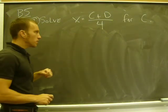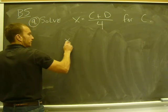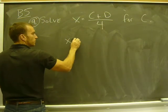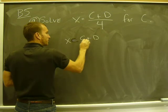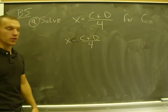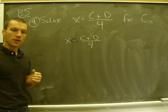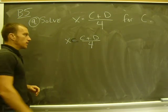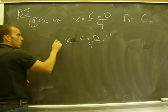So to multiply both sides of this equation by 4, let me rewrite it first. X equals C plus D over 4. Any problem with a fraction in it, that's the first thing I want to do. Multiply by the least common denominator, it's going to get rid of my fraction. So I do that times 4, times 4.